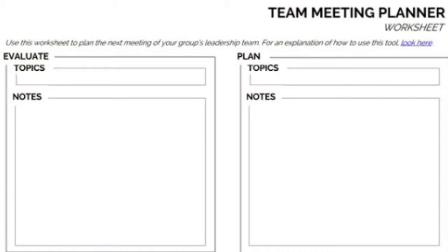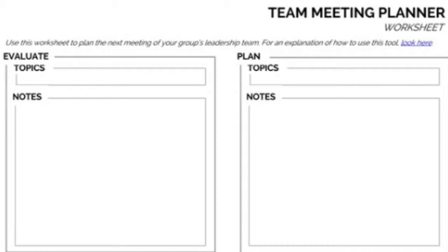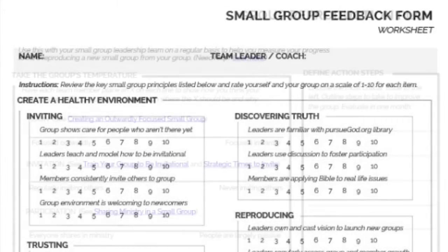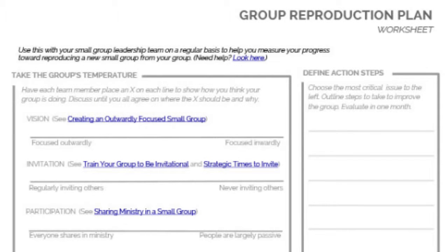The first area is Evaluate. With the overall direction of your group in mind, write down one to three areas you want to evaluate. You can use the Small Group Feedback Form or the Group Reproduction Plan — other worksheets helpful for evaluation. For example: How are you progressing toward making disciples who make other disciples? How is your group moving forward toward reproducing another group? Those are things you could evaluate.